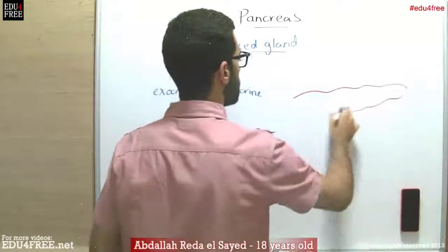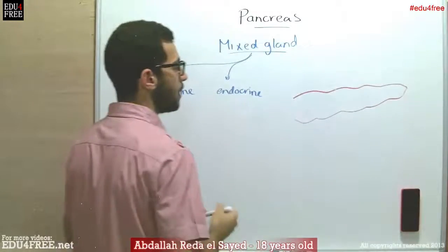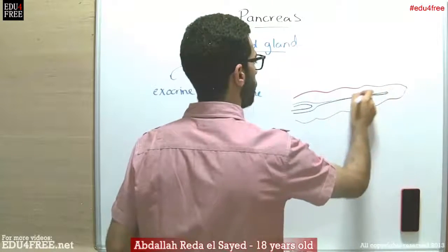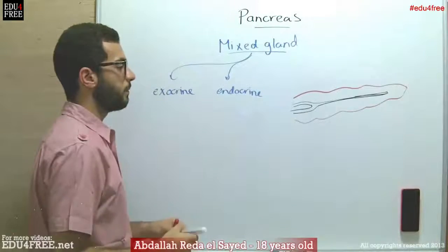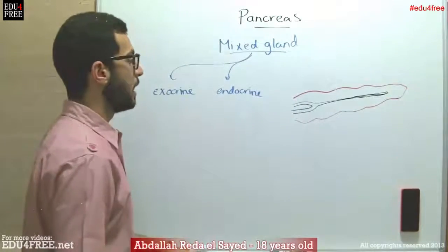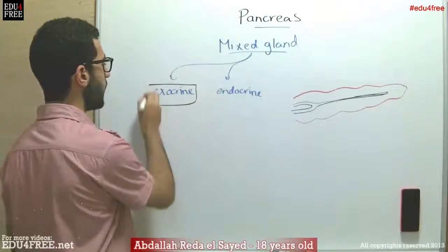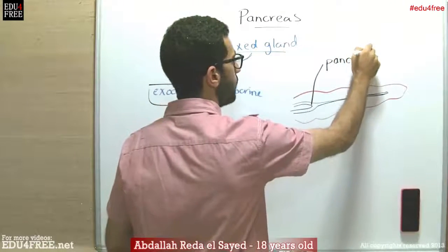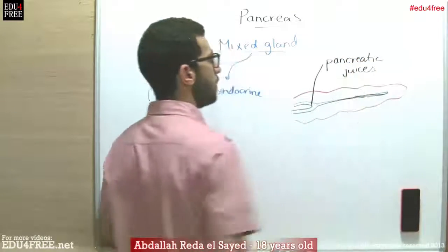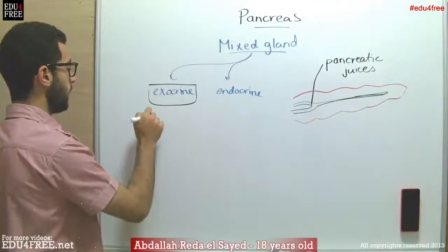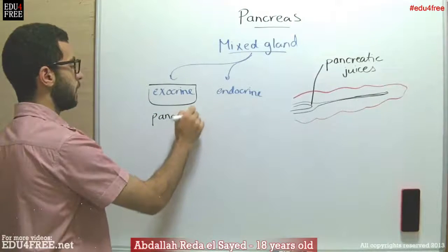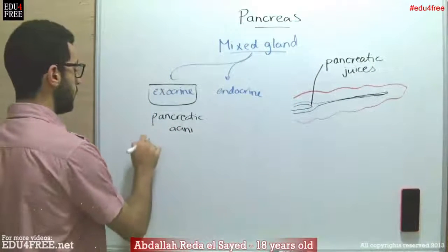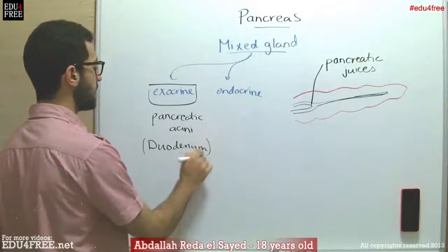This is the pancreas and this is the pancreatic duct. There are secretions that are secreted throughout this pancreatic duct — this is the exocrine function. These secretions are the pancreatic juices, secreted from cells called the pancreatic acini, and they move through the pancreatic duct until they reach the duodenum.